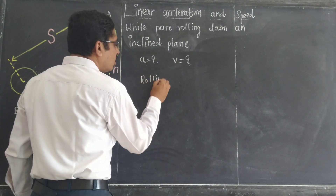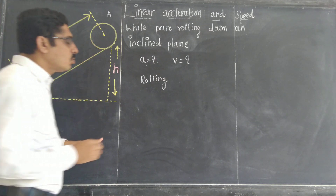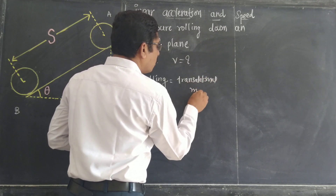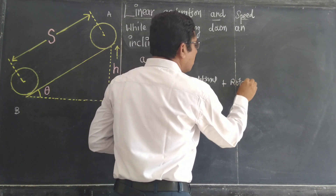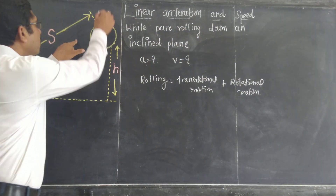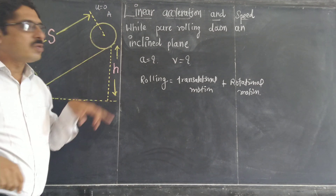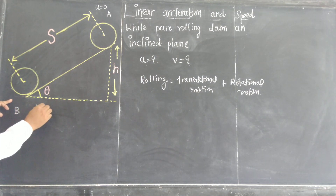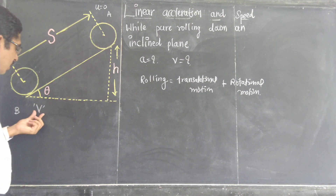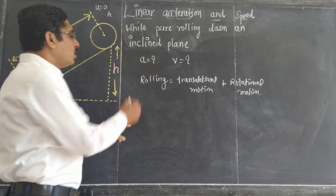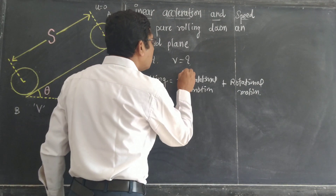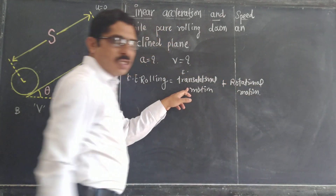In the case of rolling motion, there are two components: translational motion and rotational motion. Initially the velocity is zero. The total kinetic energy of rolling motion is the sum of translational kinetic energy and rotational kinetic energy.